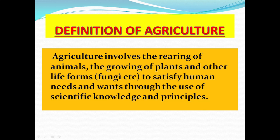Agriculture is practiced to satisfy the needs of humans, and it involves the use of scientific knowledge and principles. As you can see, agriculture involves the use of a lot of advanced technology — for example, automated greenhouses, automated poultry houses that use computers, and agriponics systems that are controlled by home systems.